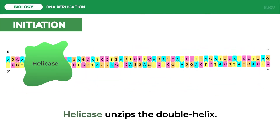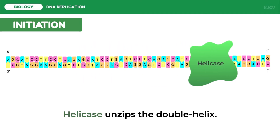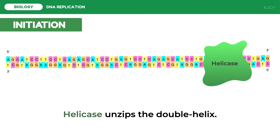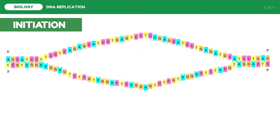Helicase creates a structure known as the replication bubble. This bubble has two Y-shaped structures recognized from both sides of the bubble, called replication forks. These forks shift in the opposite direction as the helicase unwinds the DNA, making the replication bubble wider.